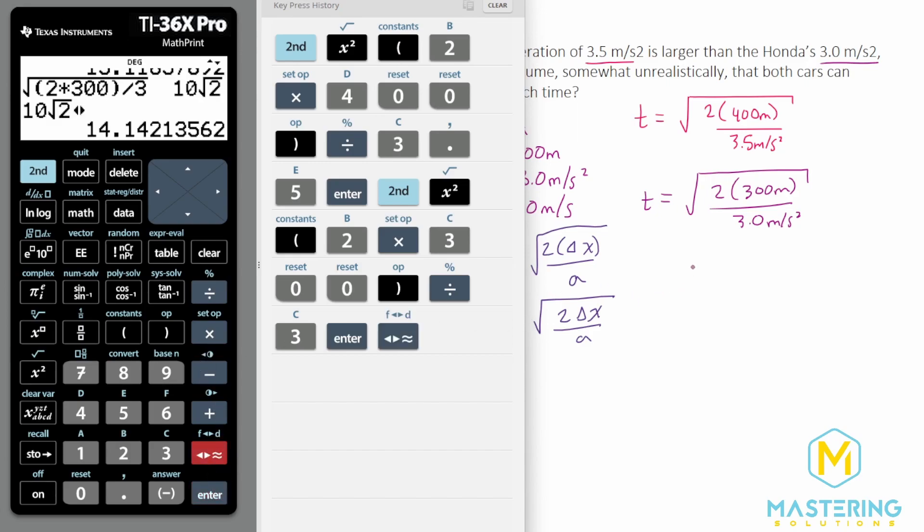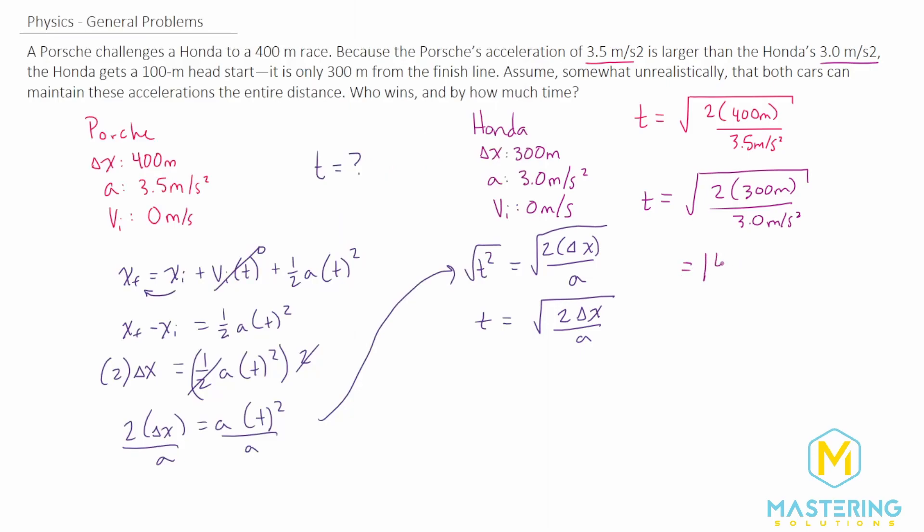So for the Honda, it was able to do the race in 14 seconds. The Porsche did the race in 15 seconds. So the Honda wins the race, and it wins it by one second.